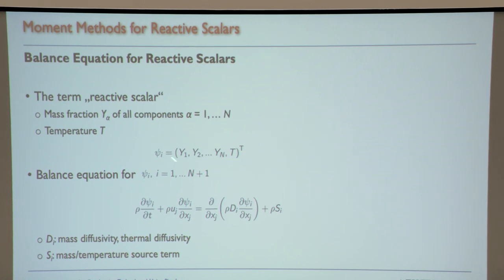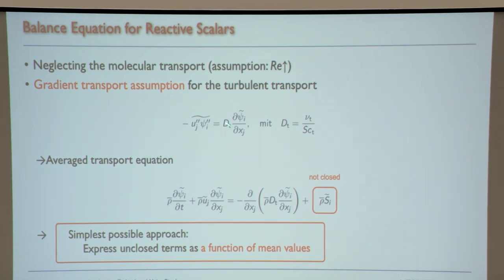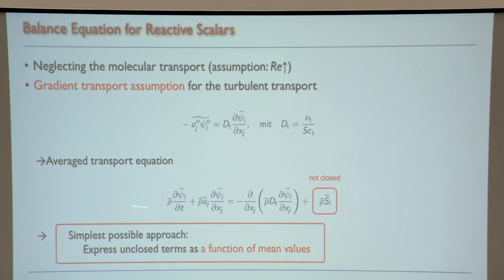We start again with the equations. We have a vector of scalars — mass fractions and temperature — and we can write the transport equation. Averaging gives an unclosed transport term, a scalar flux term. Using the gradient transport assumption closes that term, but the source term remains unclosed.